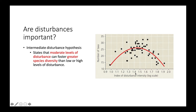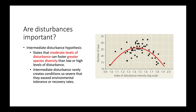In the middle range of disturbance intensity we see our greatest species diversity, and then in the higher range of disturbance intensity we again see a drop in species diversity. This relationship between intensity and the number of species in that environment has led scientists to believe that intermediate levels of disturbance are actually really good for community health. The reason they're so good is that intermediate disturbances rarely lead to conditions so extreme that they exceed the environment's tolerance or ability to recover.